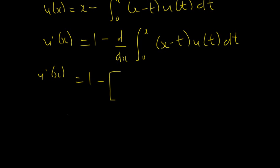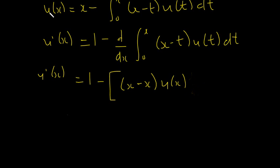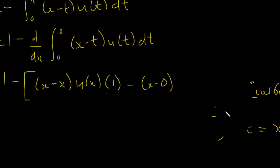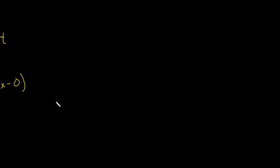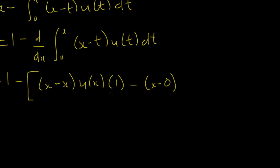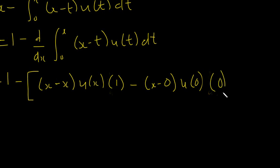So we have u'(x) equal to 1 minus: we put in x wherever we see t, so we get (x minus x) u(x), then we differentiate the upper limit dx/dx which gives us one. For the lower limit we get (x minus 0) u(0) times d(0)/dx, and that is going to be zero — multiplied by zero.